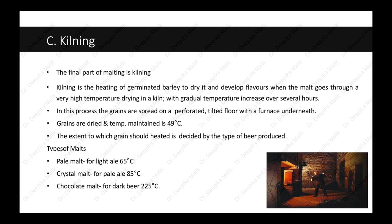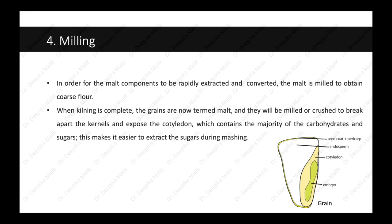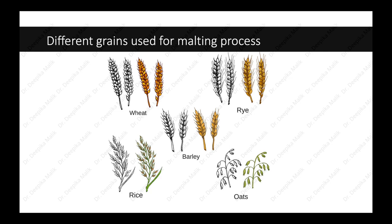The next step is sieving, done to remove malt culms — the rootlets of germinated grains — which are sold as cattle feed. After that is milling, the grinding of malted grains. In order for the malt components to be rapidly extracted and converted, the malt is milled to obtain coarse flour. When kilning is complete, the grains — now termed malt — are milled or crushed to break apart the kernels and expose the cotyledon, which contains the majority of carbohydrates and sugars. As seen in the diagram, the outer cover is the seed coat and pericarp, the internal layer is the endosperm, beneath that is the cotyledon, and the embryo is in the center.